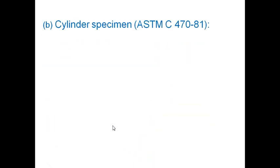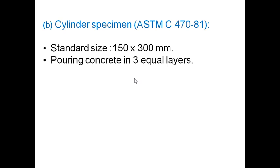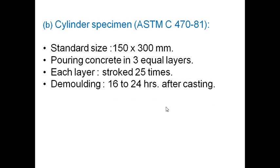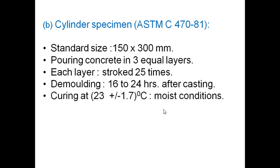Cylinder specimen as per ASTM C470-81. The standard size is 150mm diameter × 300mm height. The concrete has to be poured in three equal layers. Each layer has to be stroked 25 times with the tamping rod. The demolding has to be done after 16 to 24 hours. Curing has to be done at 23±1.7°C in moist conditions. The length to diameter ratio here is 2, that is 300÷150=2. 300 is height of the cylinder, 150 is the diameter. Therefore, height by diameter or length by diameter is 2.